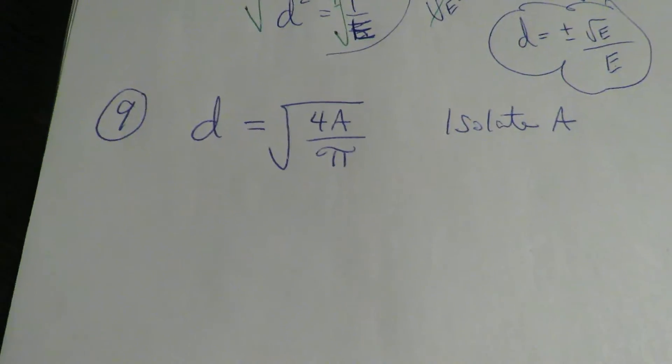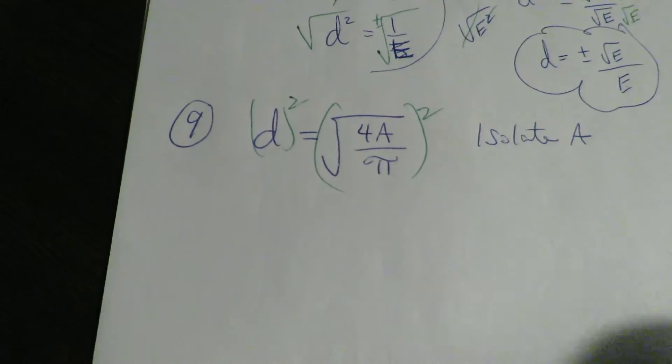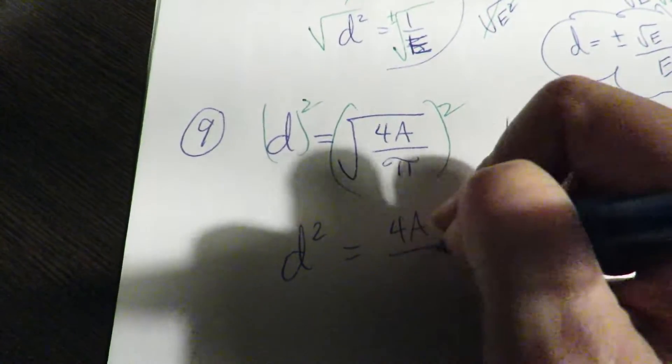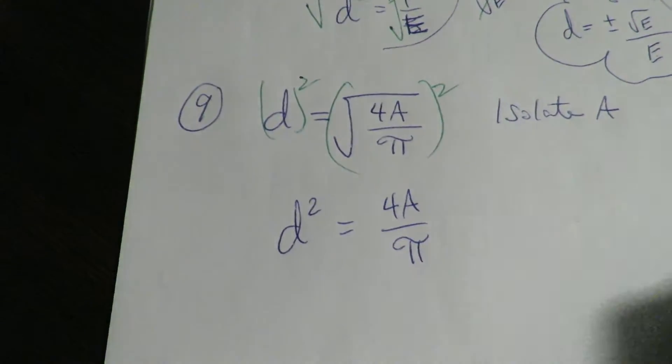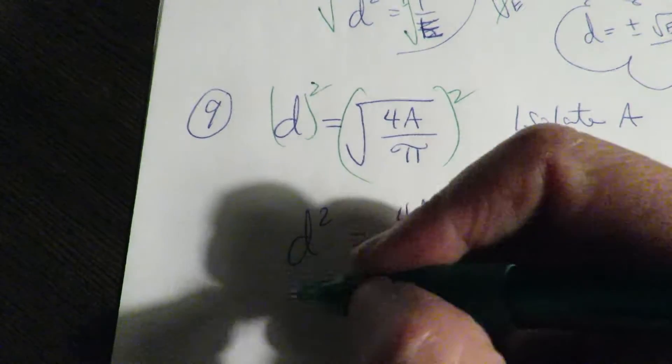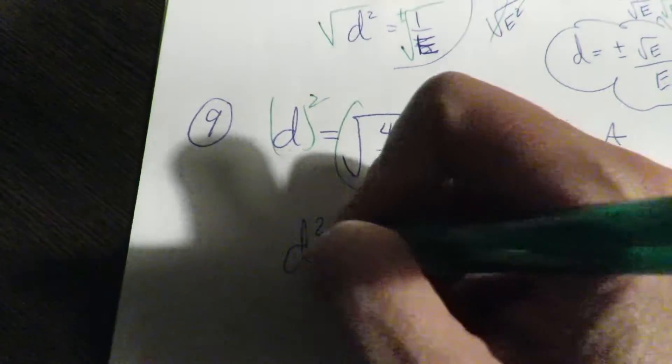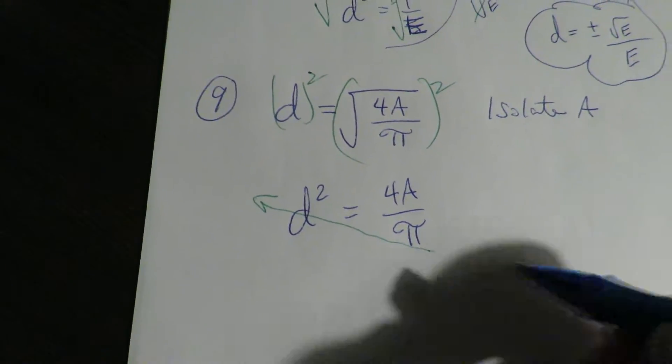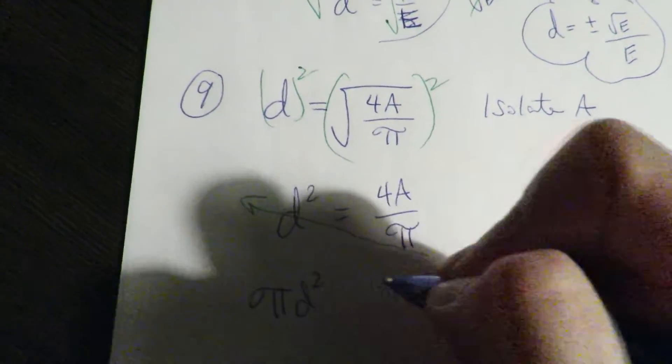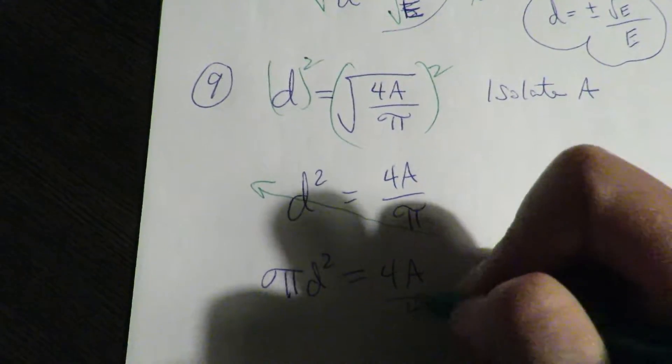To get rid of the radical, we're going to square both sides. Now I want to get this by itself. You can do this in one step and multiply by pi over four to both sides, but I'll do it in two steps in case this is confusing. I'm going to multiply the pi up to the other side, and then I'm going to divide off the four.